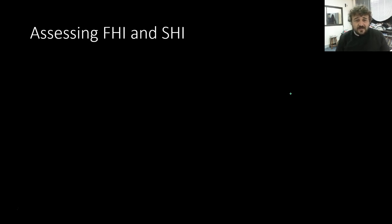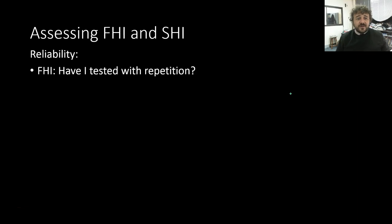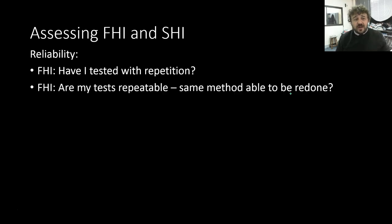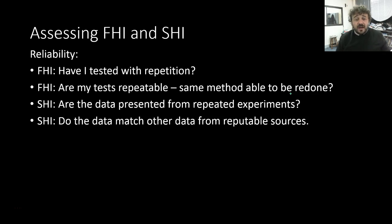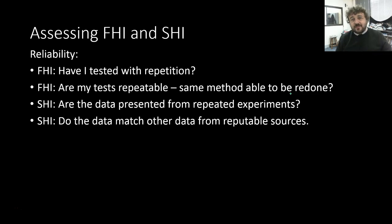We need to know how to assess first-hand and second-hand investigations. Here are questions to ask every time. For reliability: Have I tested with repetition? Repetition doesn't improve reliability but it will show you whether you're reliable or not. Are my tests repeatable — can I do the same thing over and over again? Are the data presented from repeated experiments? In a second-hand investigation, if the data aren't from repeated experiments, it might not be reliable. And do the data match other reputable sources? That's a good sign it might be reliable.